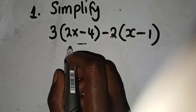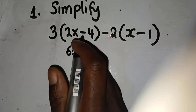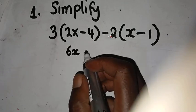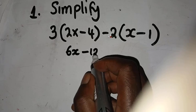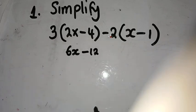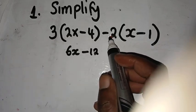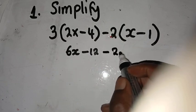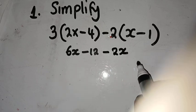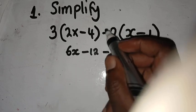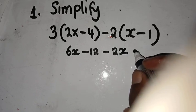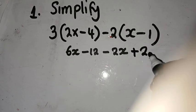So 3 multiplied by 2x is going to give us 6x. 3 multiplied by 4 is going to give us 12. Coming to this side, minus 2 multiplied by x is going to give us minus 2x. Then minus 2 multiplied by minus 1 is going to be a positive 2. I hope you're following me.